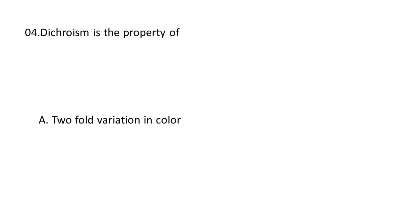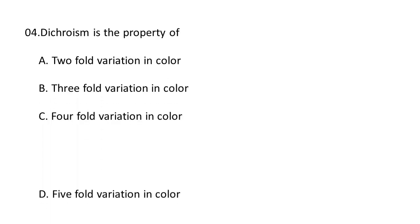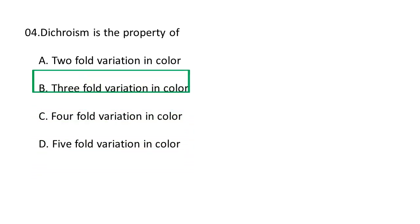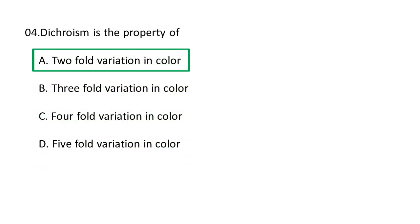Next question: Dichroism is the property of — A. two-fold variation in color, B. three-fold variation in color, C. four-fold variation in color, D. five-fold variation in color. Dichroism is the property of two-fold variation in color. It is the property of some crystals and solutions to absorb one of two plane-polarized components of transmitted light — a phenomenon that occurs when light absorption changes depending upon the direction of polarization. A is the correct option.